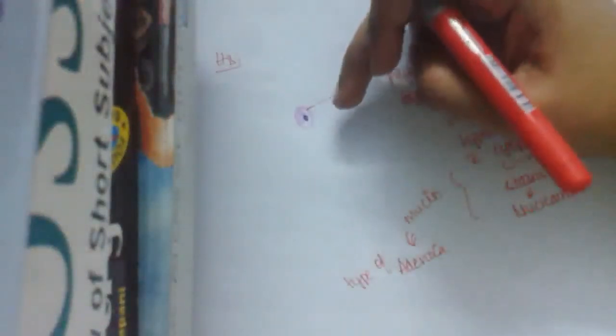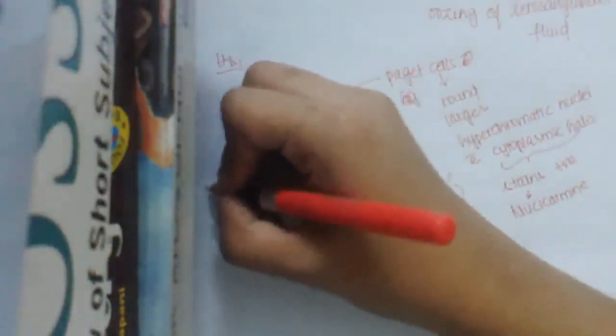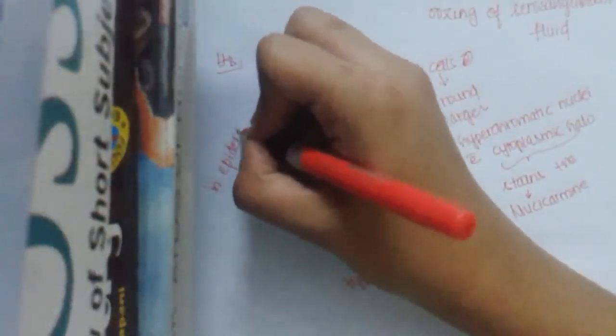Along with the Paget cells, ducts showing features of intraductal carcinoma or infiltrating ductal carcinoma may also be seen. But the primary feature is the presence of characteristic Paget cells. These Paget cells are not present singly — they are present in clusters within the epidermis.